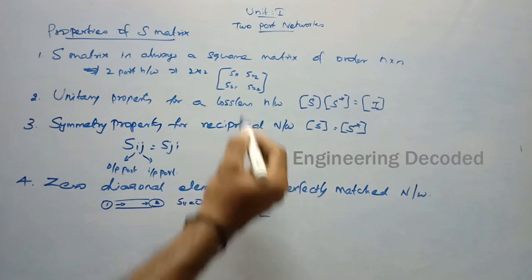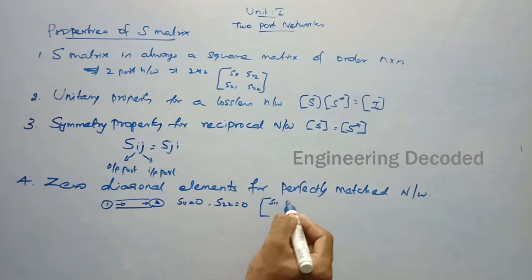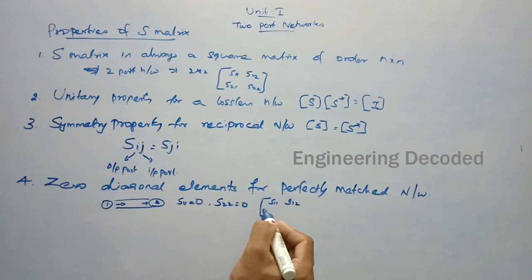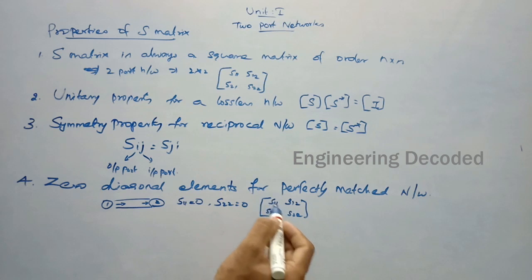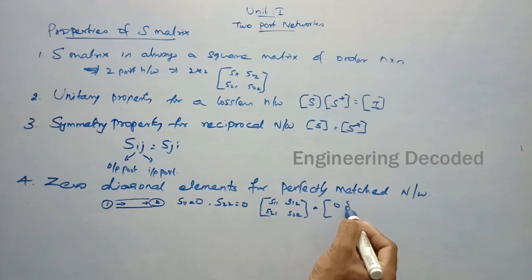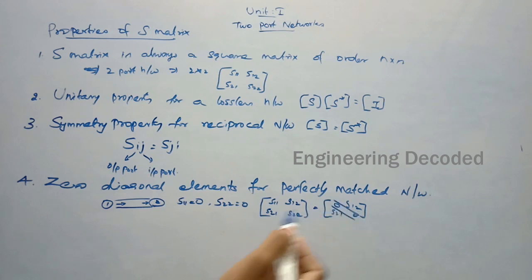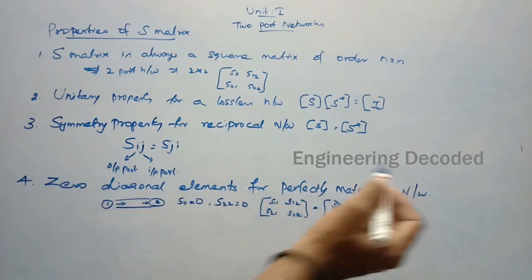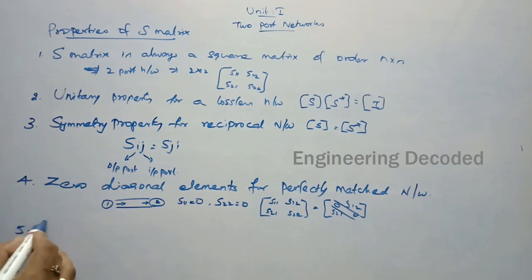The S-matrix of a two-port network is [S11, S12; S21, S22]. Since S11 = 0 and S22 = 0, you can write it as [0, S12; S21, 0]. As you can see, the diagonal elements are zero — this is the zero diagonal element property for a perfectly matched network. The last property is the phase shifting property.